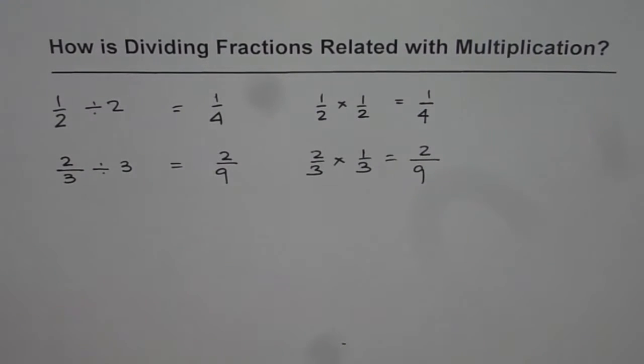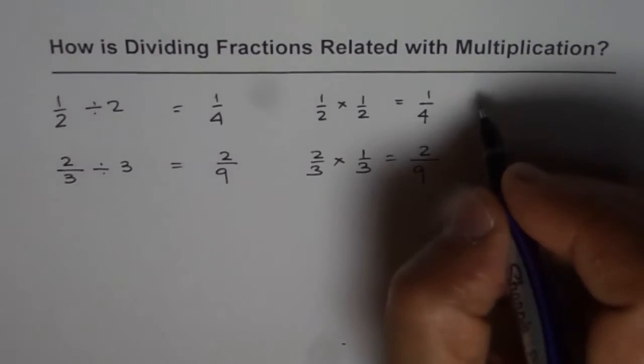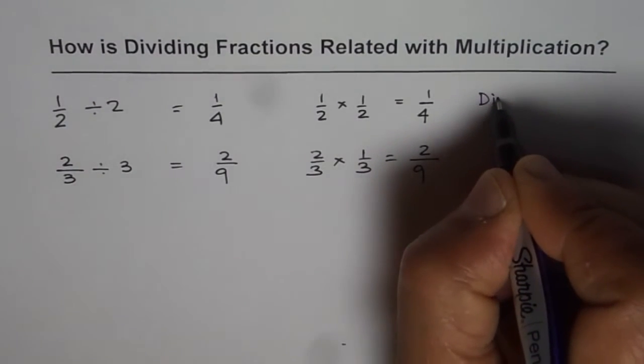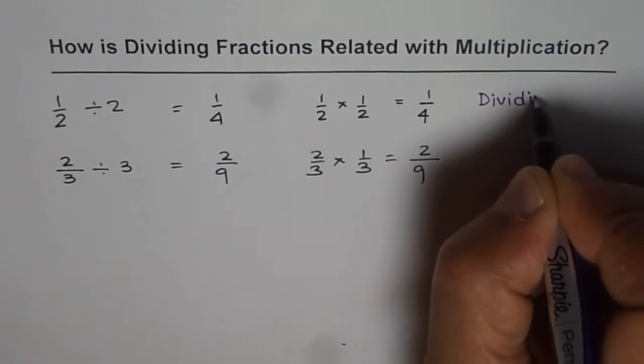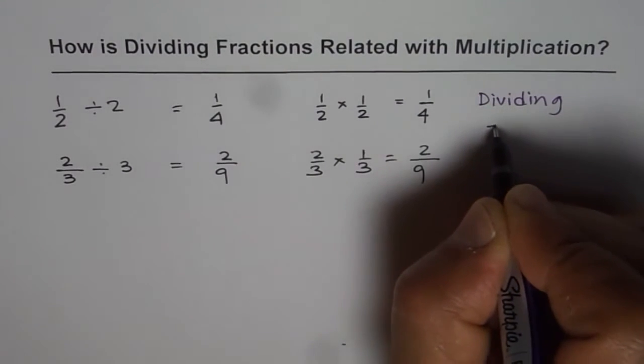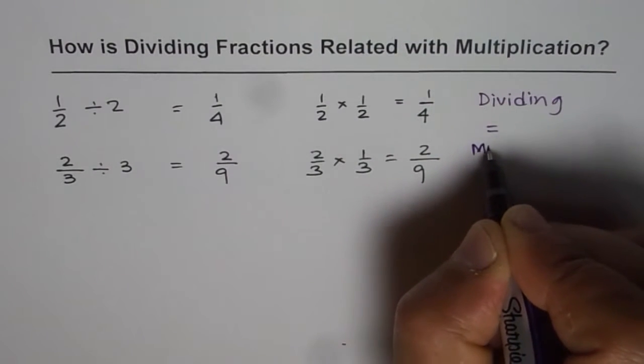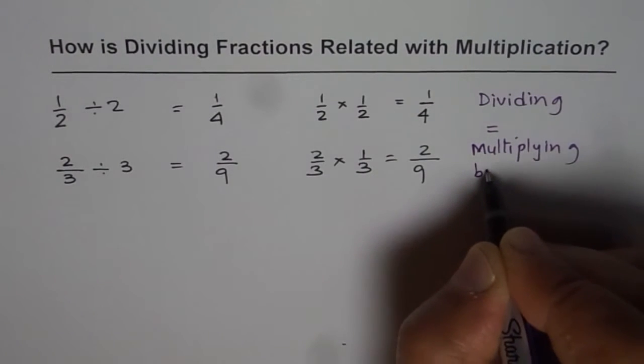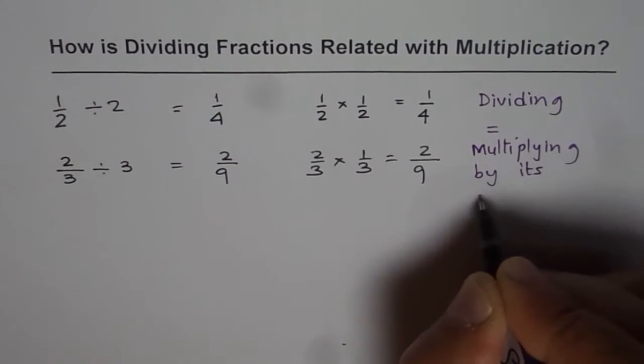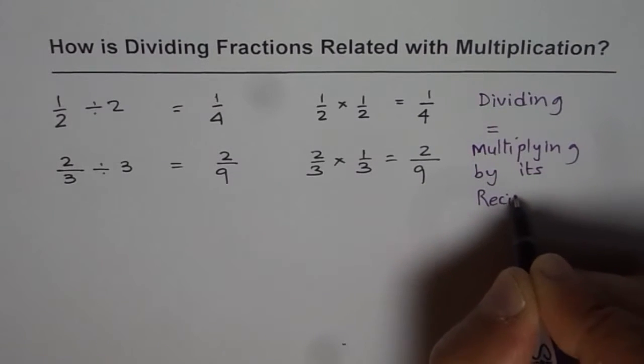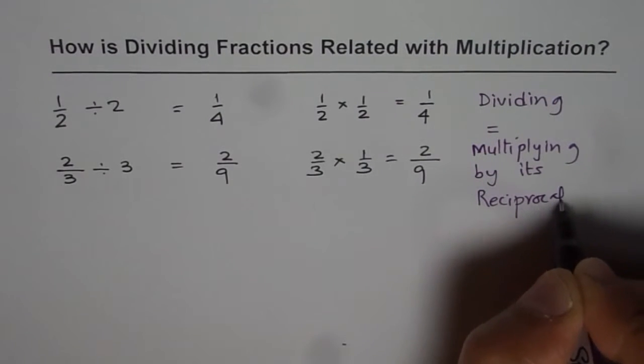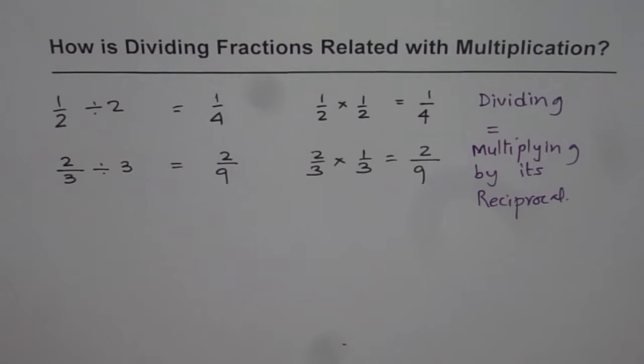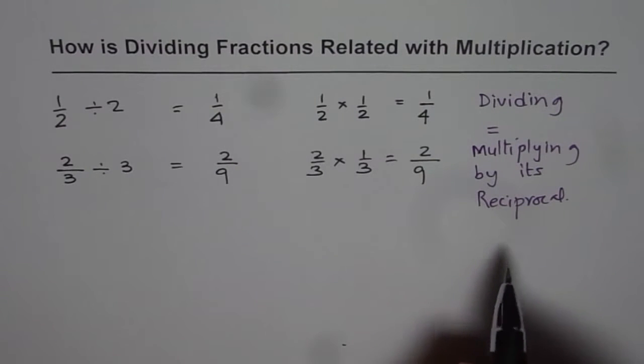So what we can conclude here is that dividing is equal to multiplying by its reciprocal. So that is what we can conclude. Now let us experiment and try some more difficult kind of questions.